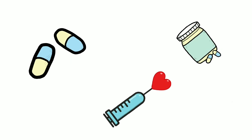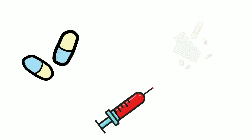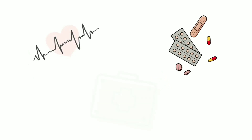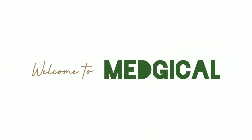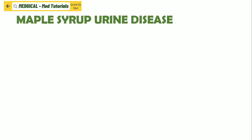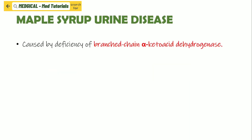What is Maple Syrup Urine Disease? Maple Syrup Urine Disease is caused by deficiency of branched-chain alpha-keto acid dehydrogenase. It is an autosomal recessive inheritance.